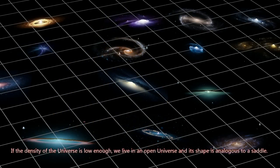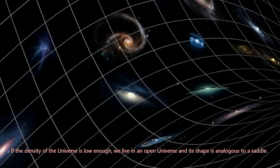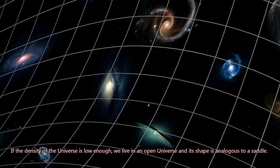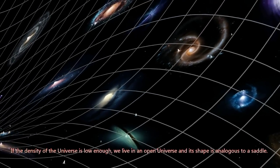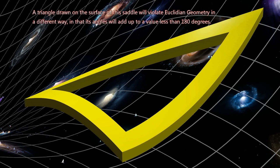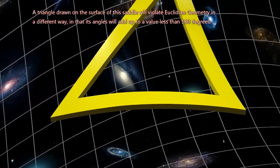If the density of the universe is low enough, we live in an open universe, and its shape is analogous to a saddle. A triangle drawn on the surface of this saddle will violate Euclidean geometry in a different way, in that its angles will add up to a value less than 180 degrees.